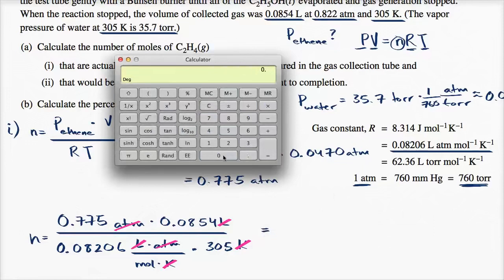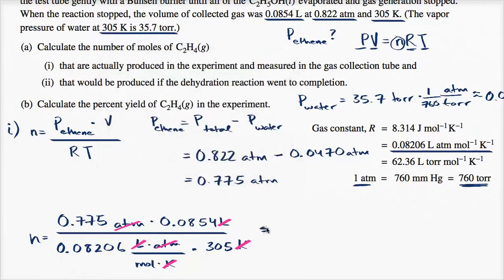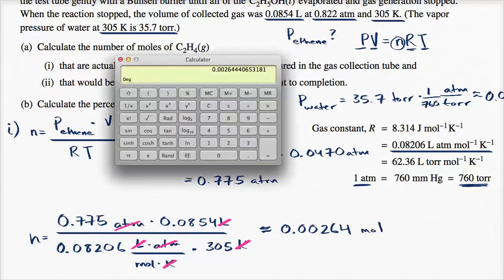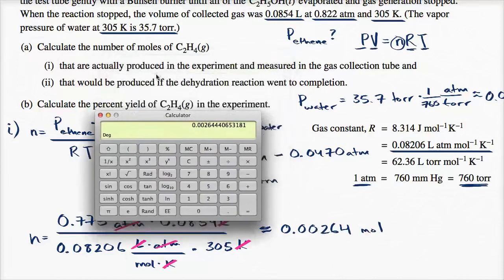Computing the result: 0.775 atmospheres times 0.0854 liters, divided by 0.08206 times 305 Kelvin, gives us approximately 0.00264 moles. To three significant digits, the number of moles of ethene actually produced in the experiment and measured in the gas collection tube is 0.00264 moles.